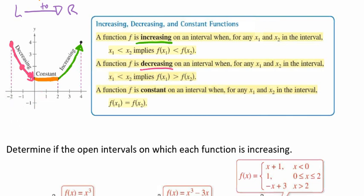Lastly, a function is constant on an interval when for any x1 to x2, that f(x) value is the same. Notice that this value doesn't change — it is the same as a slope of 0. It doesn't change; it's consistent. It has the same value, so it was 1 here and 1 there. That means constant.